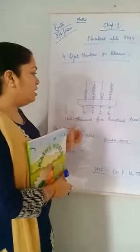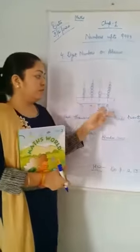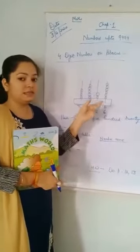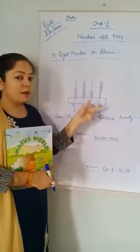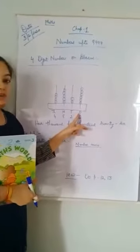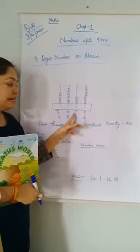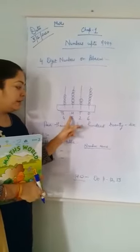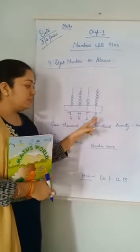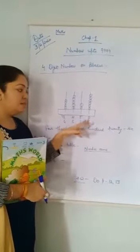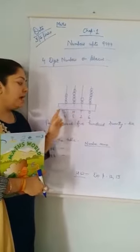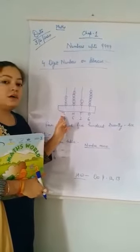You know now what is this? This is an abacus. And this is what? Ones, tens, hundreds, thousands. What is this? Ones, tens, hundreds and thousands.